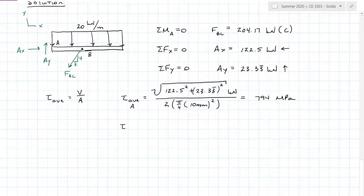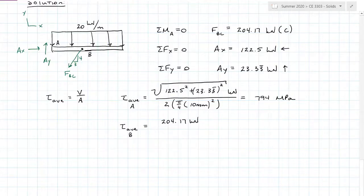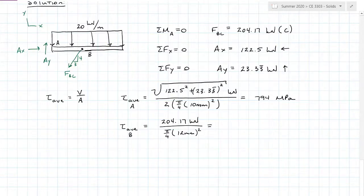For pin B, it's in single shear. The resultant force at B is already known from the two-force member: 204.17 kilonewtons. Dividing by one area — pi over 4 times (12 mm) squared — gives an average shear stress of 1.80 gigapascals.